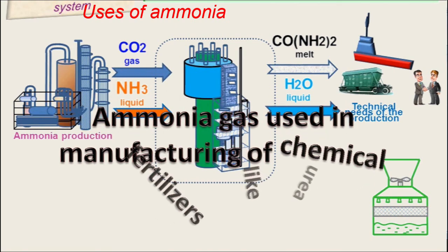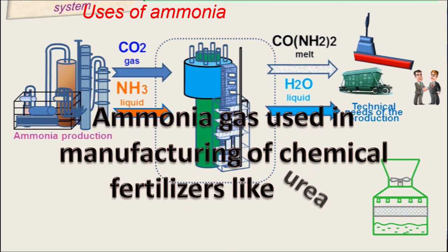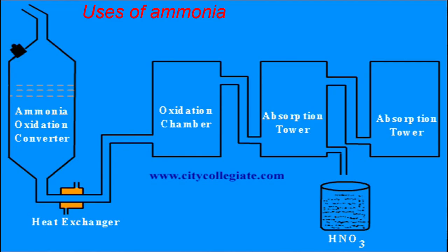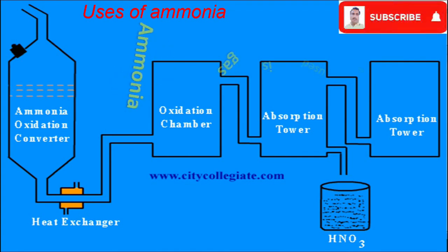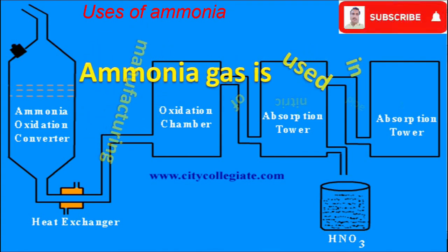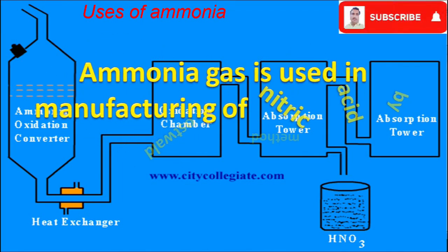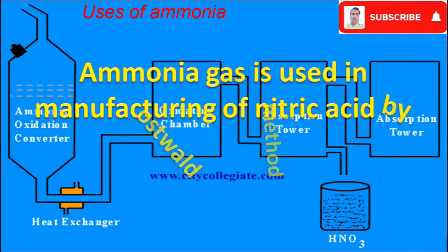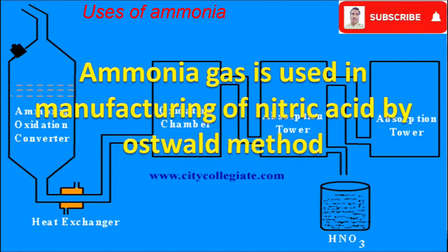Ammonia gas is used in the manufacturing of chemical fertilizers like urea. Ammonia gas is also used in the manufacturing of nitric acid by the Ostwald process.